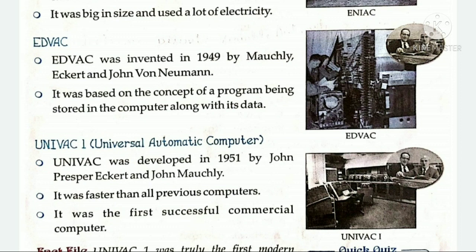EDWAC was invented in 1949 by Mosley, Eckert, and John von Neumann. It was based on the concept of a program being stored in the computer along with its data. It covered 490 square feet of floor space and weighed 17,300 pounds. EDWAC को Mosley Eckert और John von Neumann ने 1949 में invent किया था. यह एक program के concept पर आधारित था जिसे computer में अपने data के साथ store किया जाता था. यह 490 square feet floor space को cover करता था और इसका weight 17,300 pounds था.